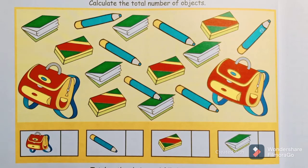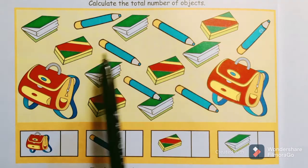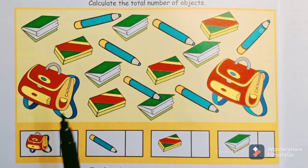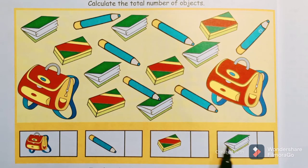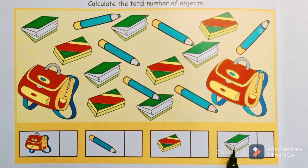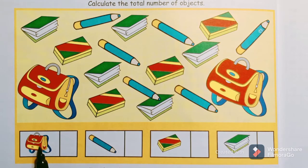Hello everyone and dear children, welcome back to the channel. Today in this video we are going to see a worksheet on counting the total number of objects. In this worksheet we have different types of objects with the same picture. The types of objects are a bag, a pencil, an eraser, and a book — there are four types of objects. In this group we have to find the individual number of objects.